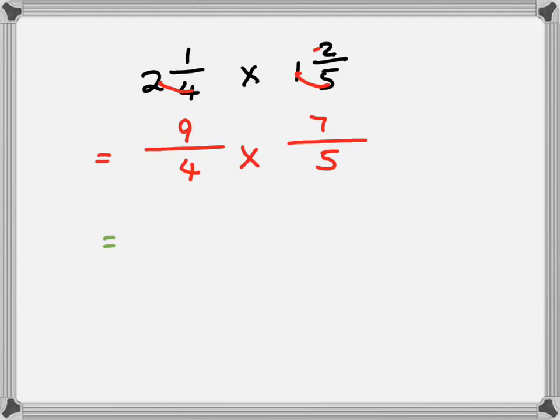Now we're going to times them out sideways. 9 times 7 is 63, and 4 times 5 is 20. Now we're going to convert our improper fraction into a mixed number. 20 will go into 60 three times, and then there's going to be a 3 left over, because 20 times 3 is 60. So 63 minus 60 is a 3 left over, over 20.